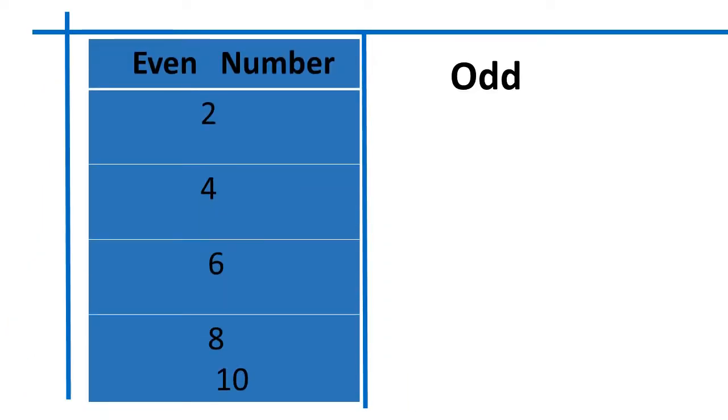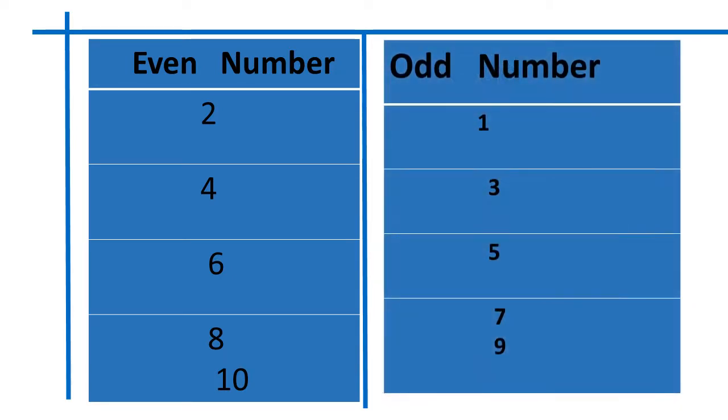Here, you remember that 2, 4, 6, 8, and 10 are even numbers in numbers 1 to 10. And 1, 3, 5, 7, and 9 are odd numbers in numbers 1 to 9.